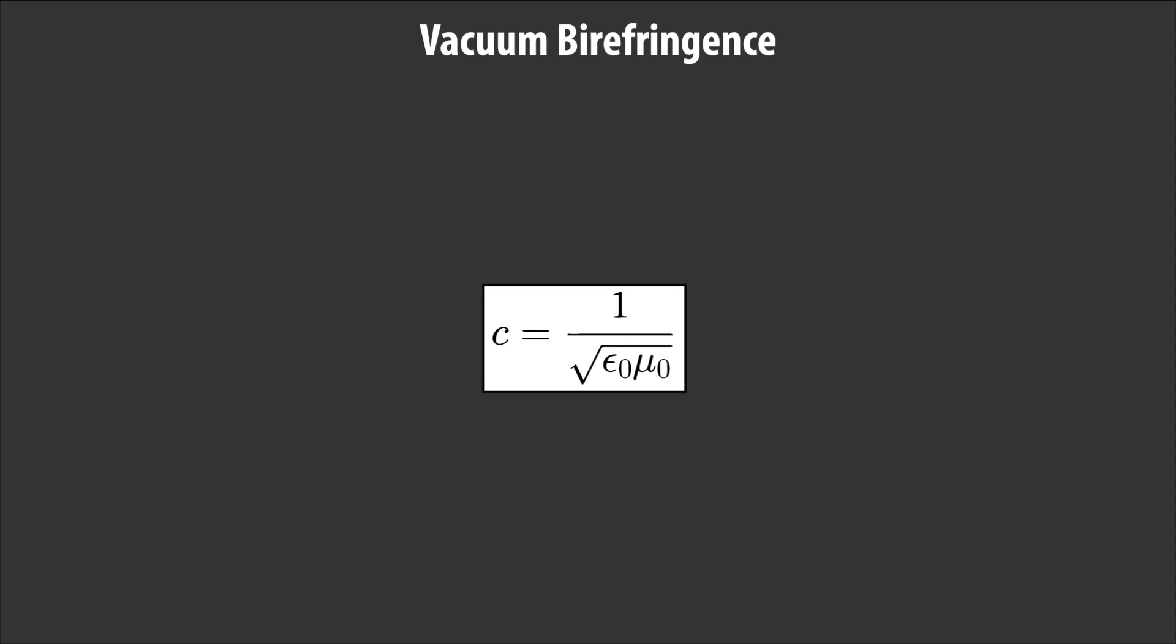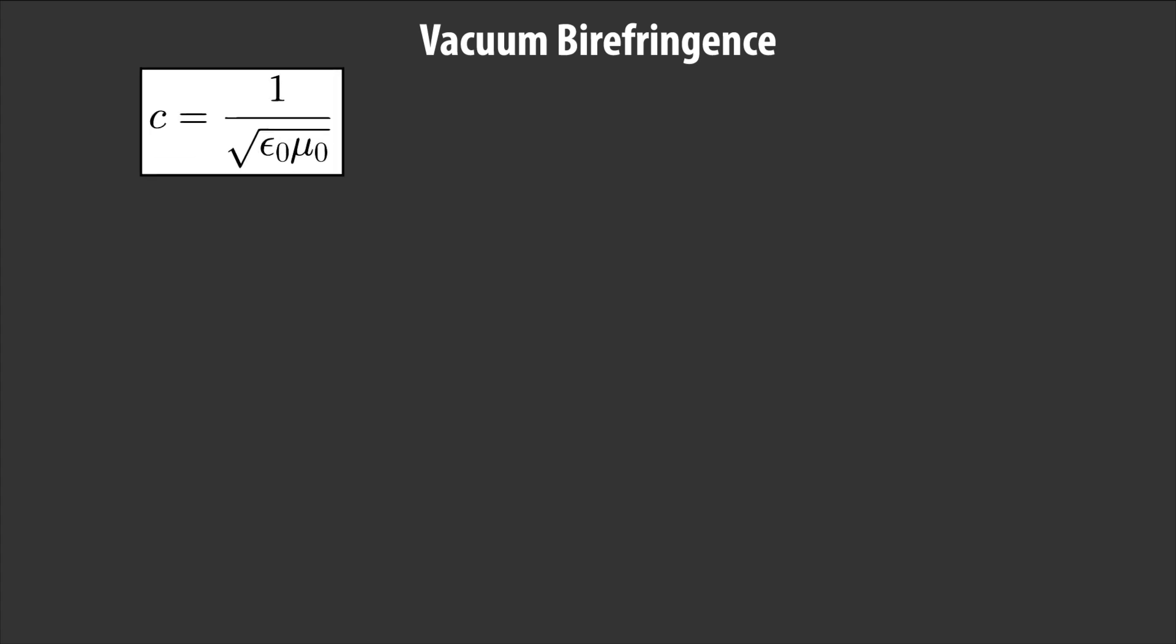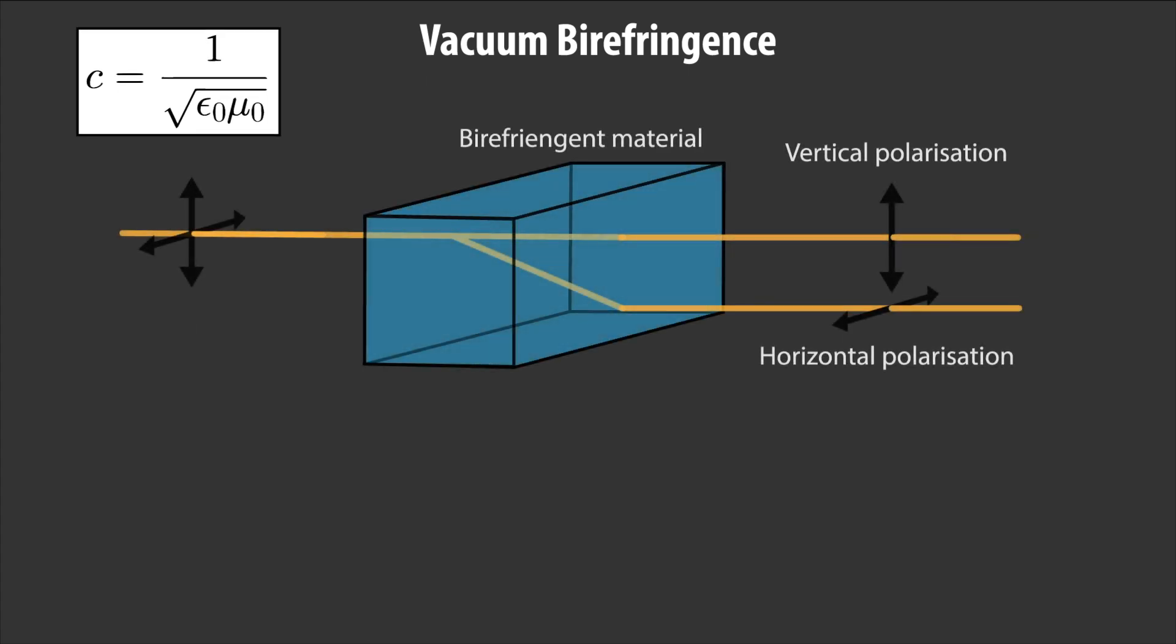The speed of light is given by c equals one on the square root of epsilon naught and mu naught. These are the vacuum permittivity and permeability, and in general, we assume that these constants are in fact that, constant.